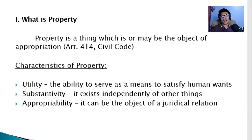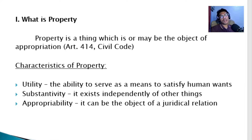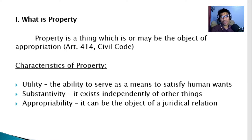Appropriability is the characteristic that states a thing can be the object of a juridical relationship. This is not limited to ownership — a property can still be appropriable if it can be the subject of relations or transactions involving something less than ownership, such as mere possession. Contracts like commodatum, lease, or deposit involve possession, use, or enjoyment rather than ownership. That is the idea of appropriability.